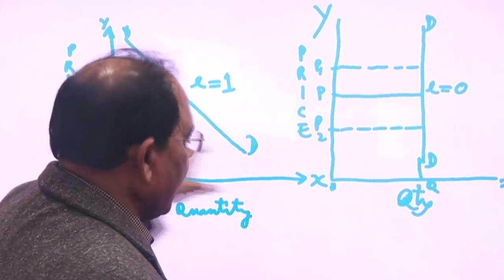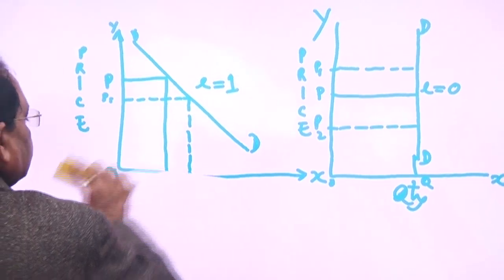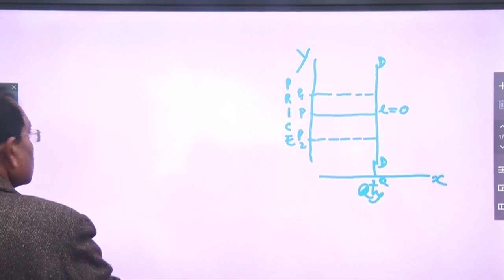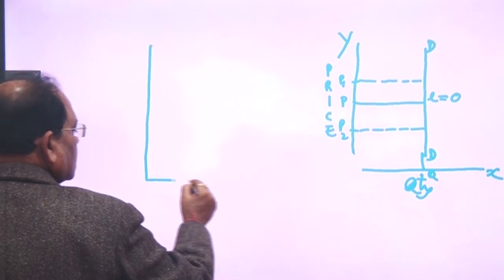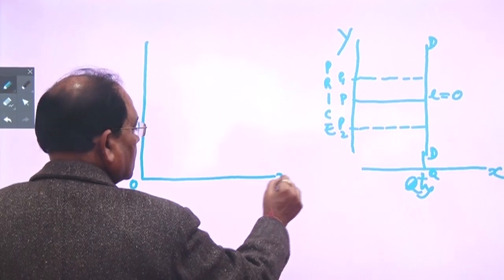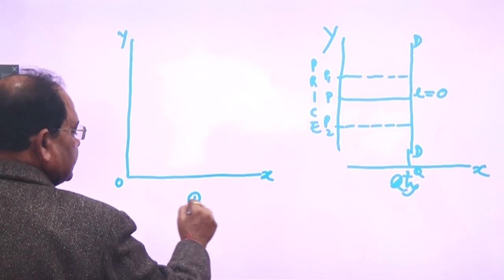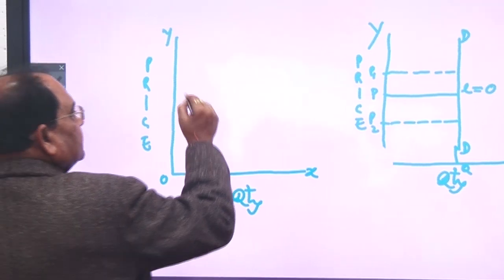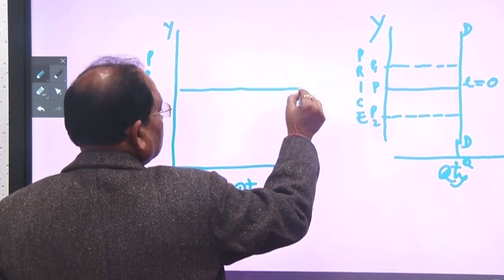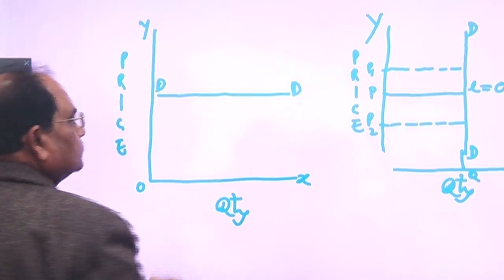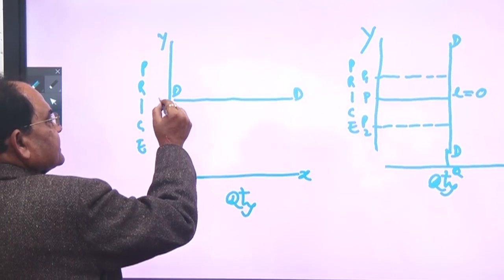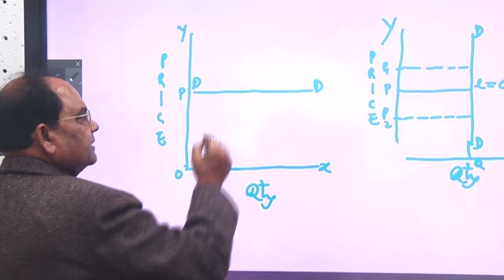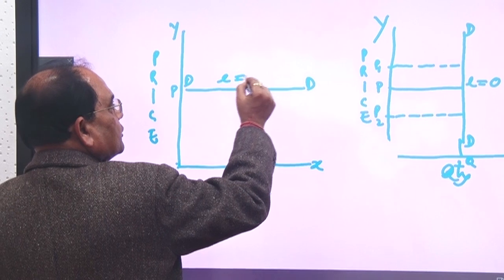If the demand curve becomes a horizontal line, price is fixed at P and quantity may vary to any point from zero to infinity. This means that at a given price, any amount can be demanded. In this situation, elasticity equals infinity.